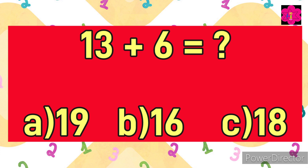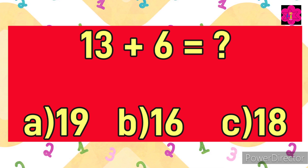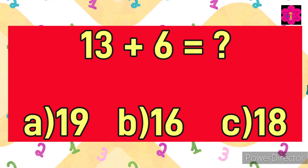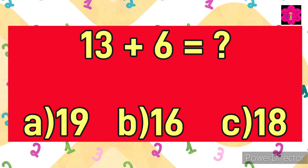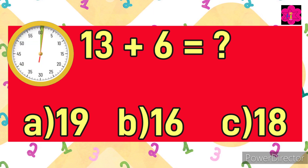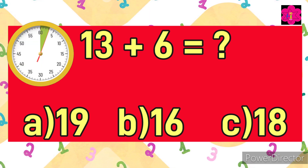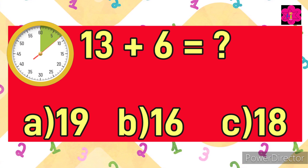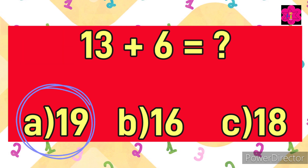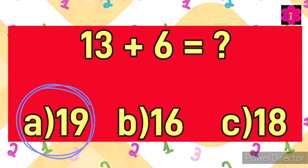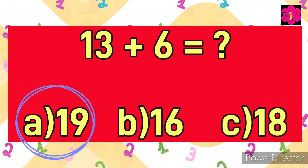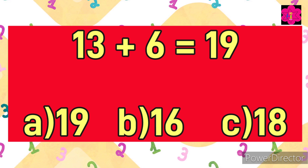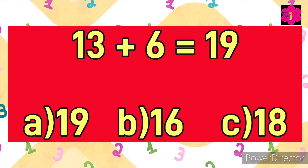Next sum: 13 plus 6 is equal — your options are A) 19, B) 16, and C) 18. Your time starts now! Well done kids! The correct answer is A) 19. 13 plus 6 is equal to 19. Good job kids!